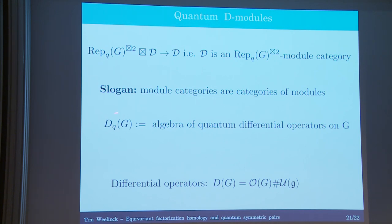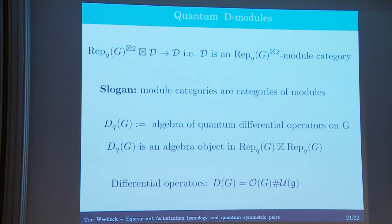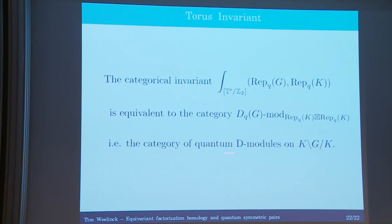Where should DQG live? It naturally lives in rep QG tensor rep QG, encoding this left and right action that is naturally present. If DQG is an algebra object there, then we can look at the category of modules for this algebra object internal to rep QG tensor rep QG. This allows us to formulate our results: if you want to compute the categorical invariant of this punctured torus, we get the category of modules for DQG, but not in rep QG tensor rep QG — rather in rep QK tensor rep QK.